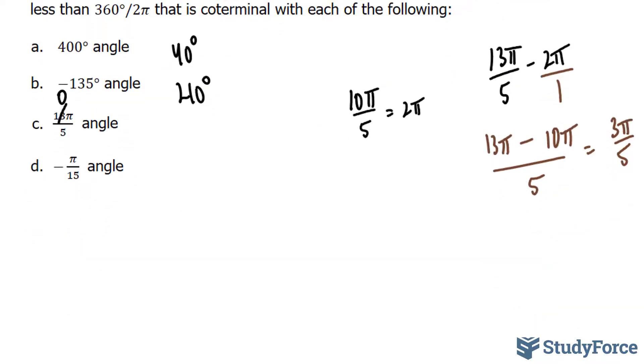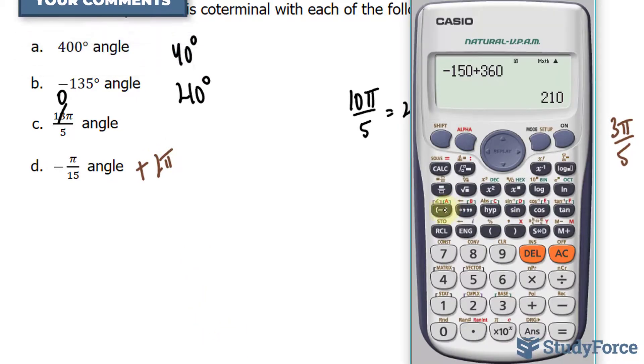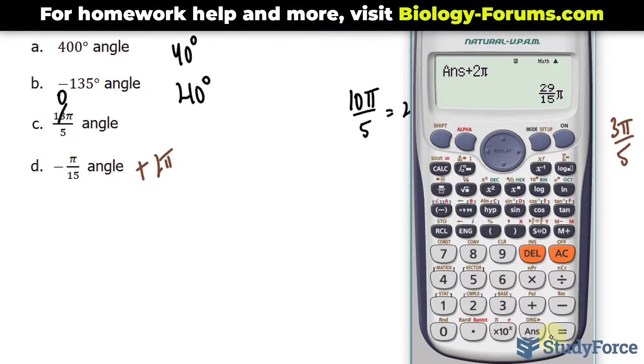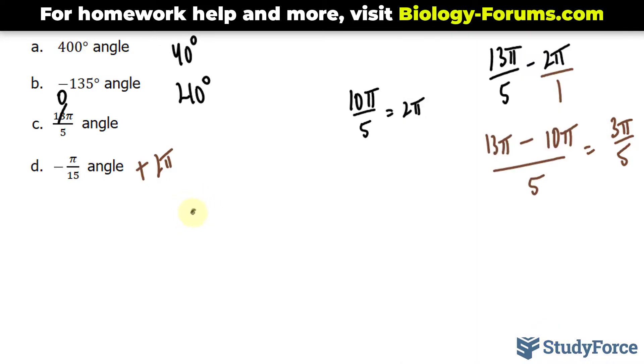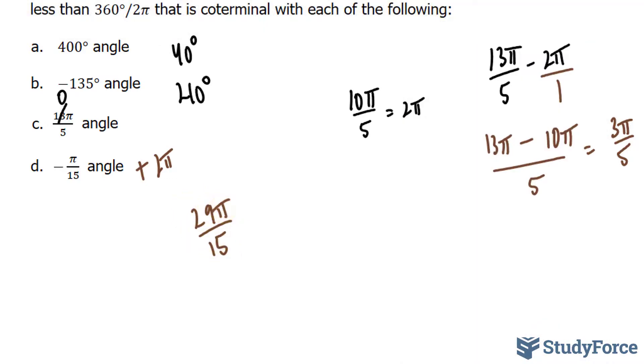Lastly, we have negative pi over 15. This is a negative number. They want us to have positive angles. So you have to add 2 pi to this. And for this I'll use my calculator. Negative, and you always want to use pi. Don't use 3.14. Divide it by 15. That represents the following. Plus 2 pi, which gives us 29 pi over 15. 29 pi over 15 is coterminal to our angle.